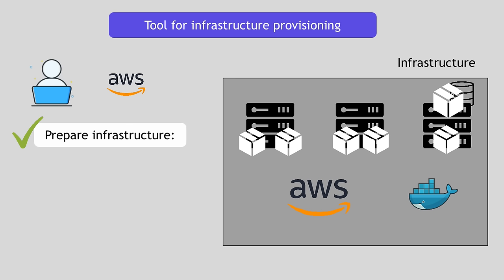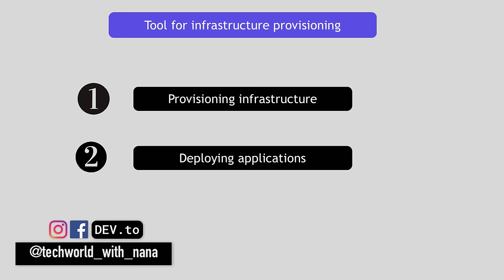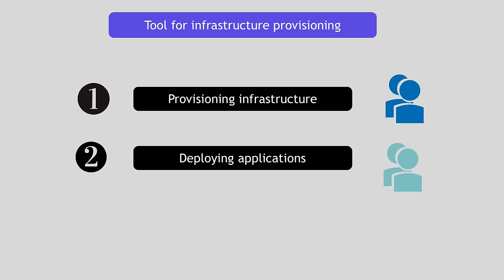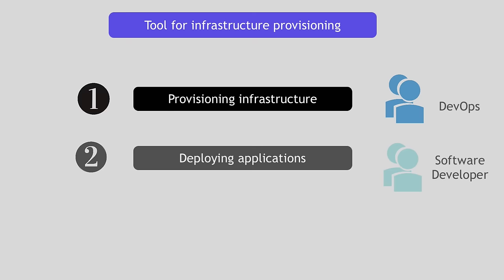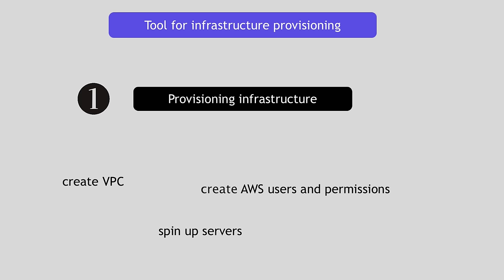Once the infrastructure is prepared, you can deploy your Docker containers on that prepared infrastructure. These are two different tasks: one is provisioning the infrastructure — preparing everything so the application can be deployed — and the second is actually deploying the applications on it. You might even have two separate teams doing these tasks. A DevOps team member configures the infrastructure and a developer deploys the applications. Terraform is used for the first part: provisioning the infrastructure, creating the VPC, spinning up servers, creating security, the AWS user with permissions, installing Docker, etc. — all in the correct order.